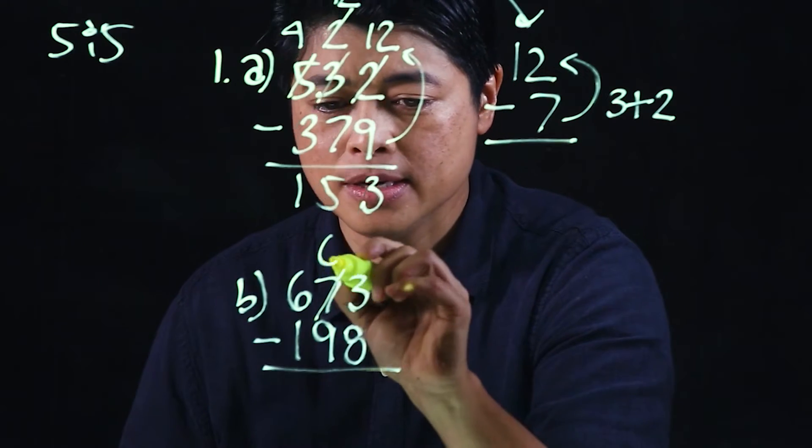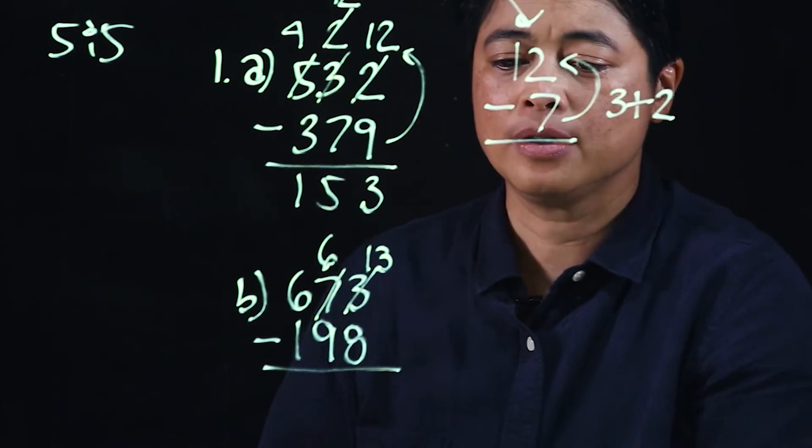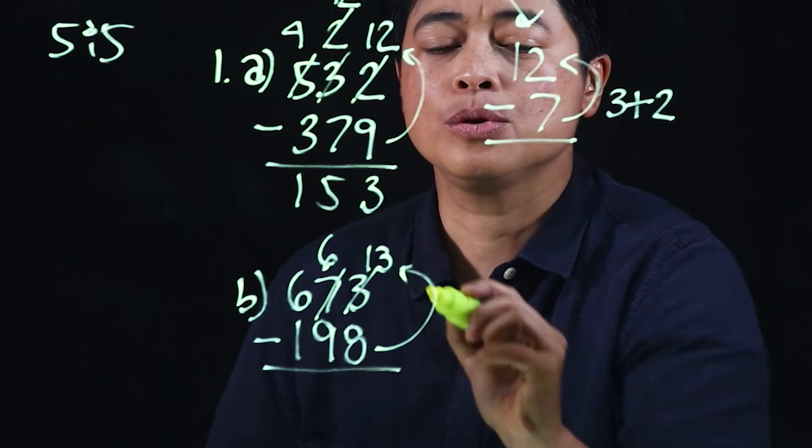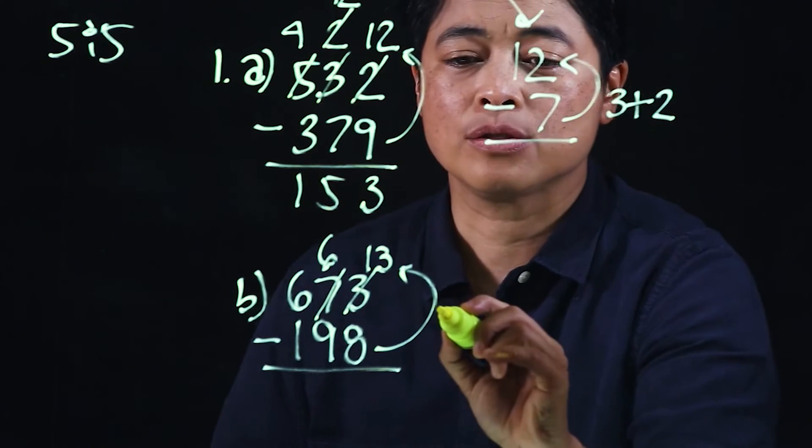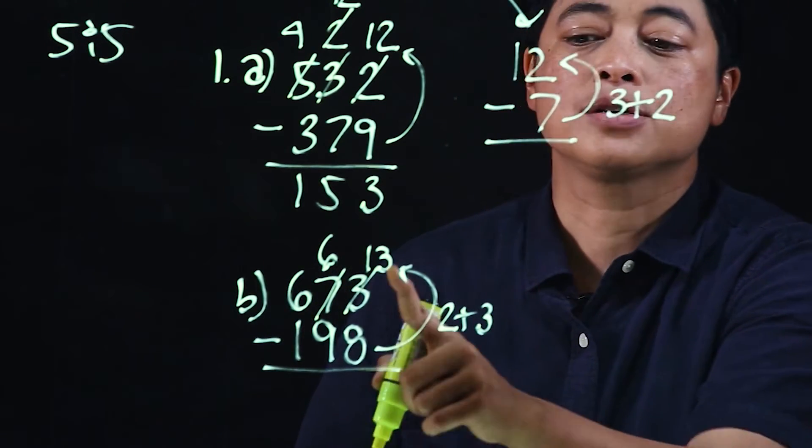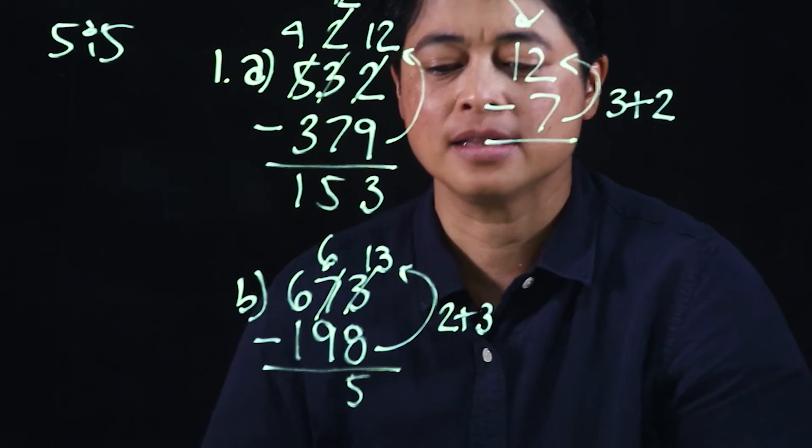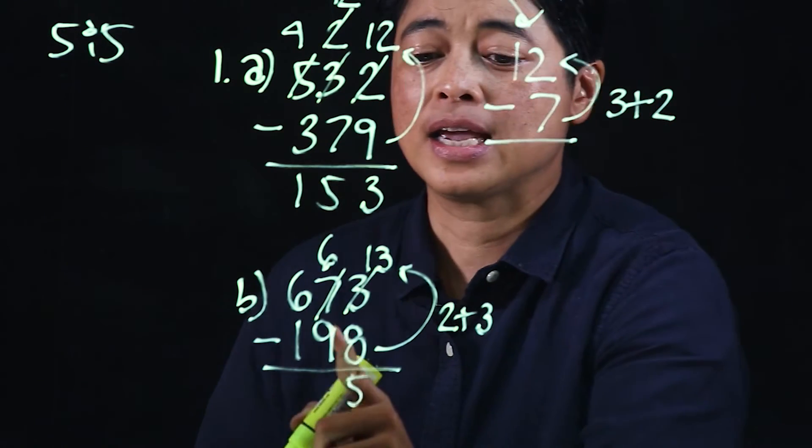Here we cannot subtract eight from three, so we need to borrow and regroup. We need to get to thirteen, so to get to thirteen we need two plus three—two to get to ten plus three to get to thirteen, which makes it five.